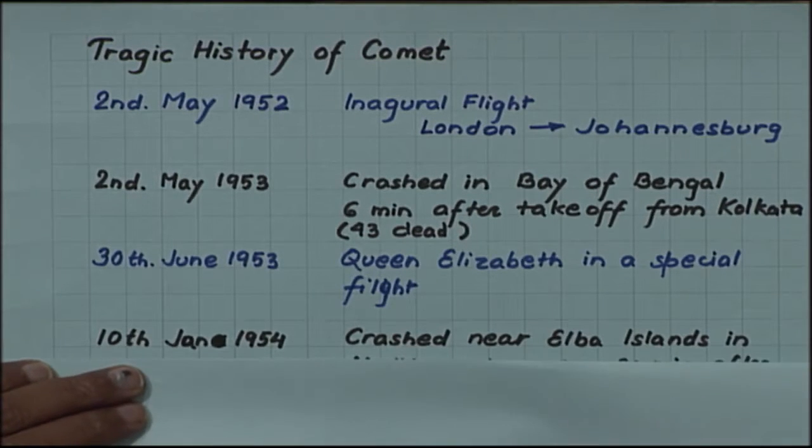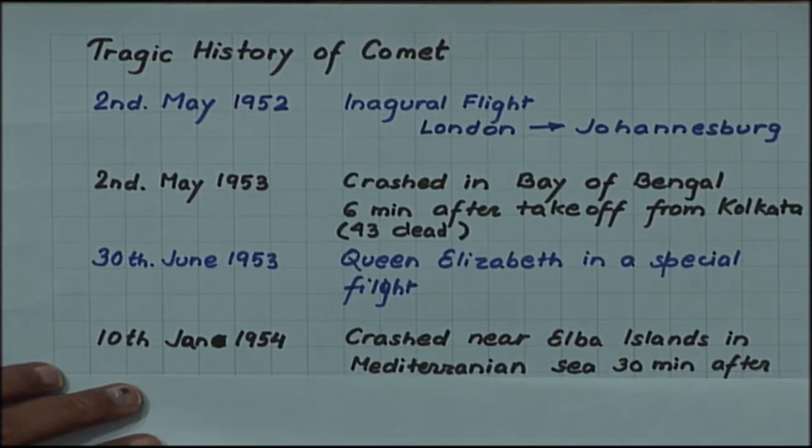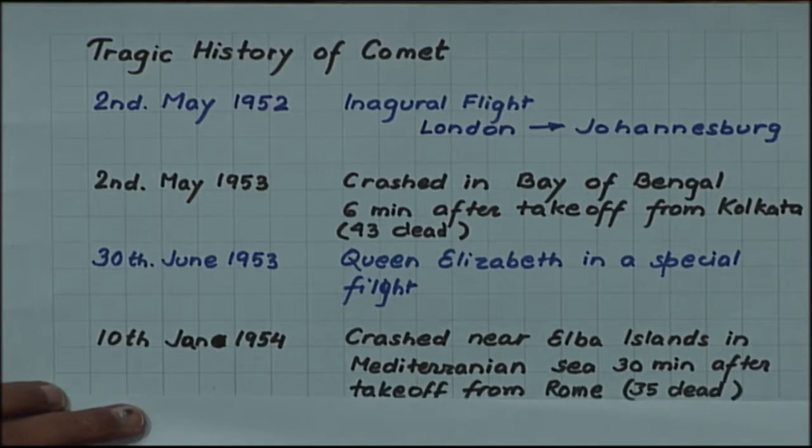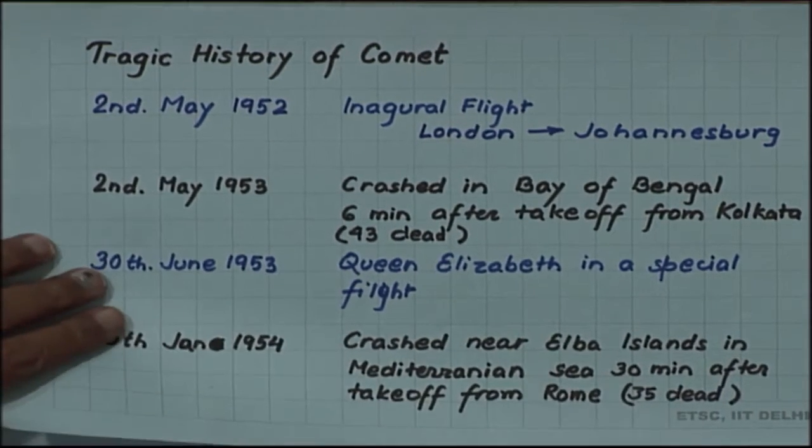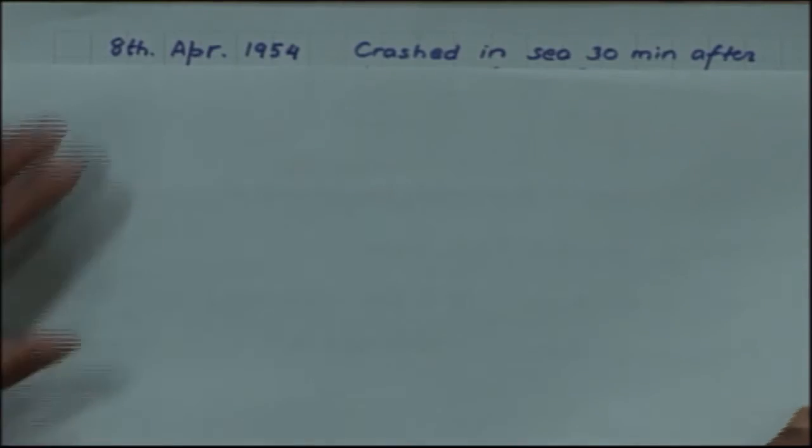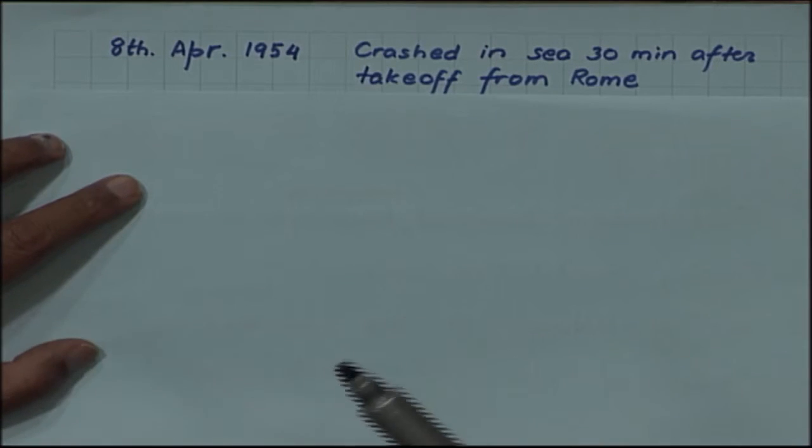Then on 10th January 1954, another crash happened near Elba Islands in the Mediterranean Sea, 30 minutes after takeoff from Rome. 35 people died. Then another flight from Rome on 8th April 1954 crashed in sea 30 minutes after takeoff. After a series of such accidents, the airworthiness of this new aircraft was being questioned and people started getting worried.